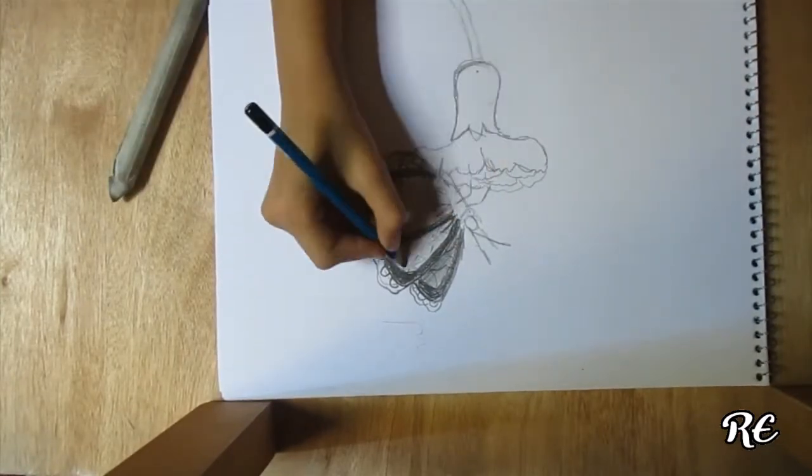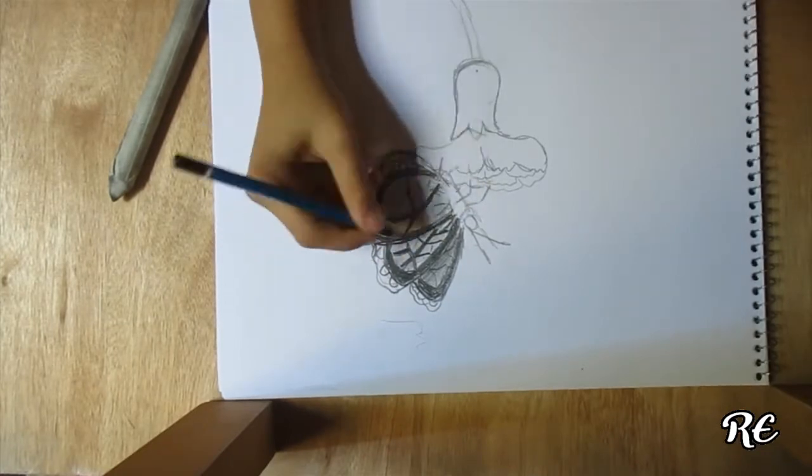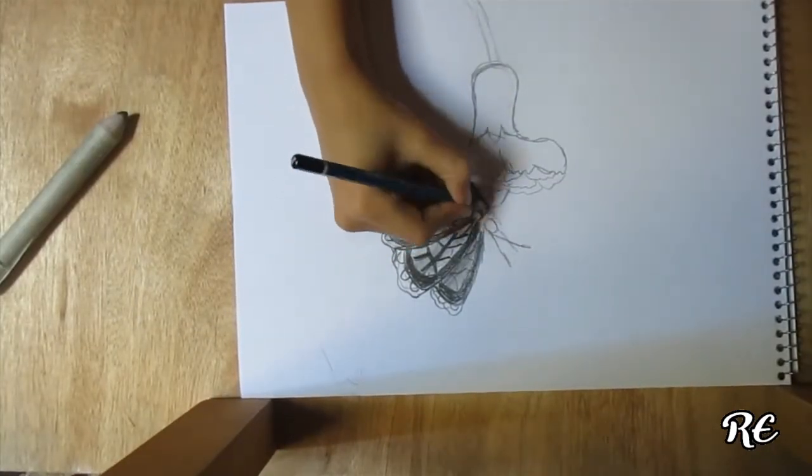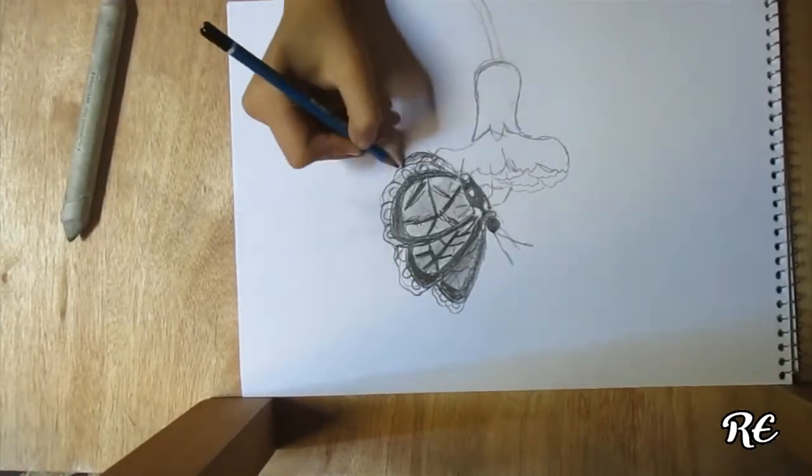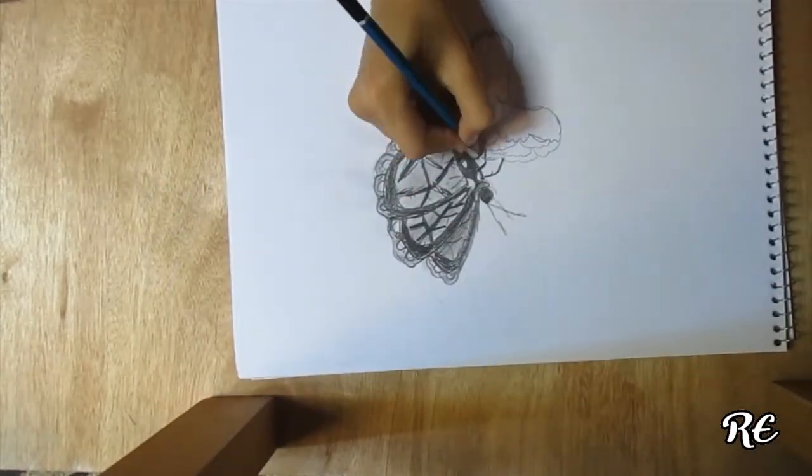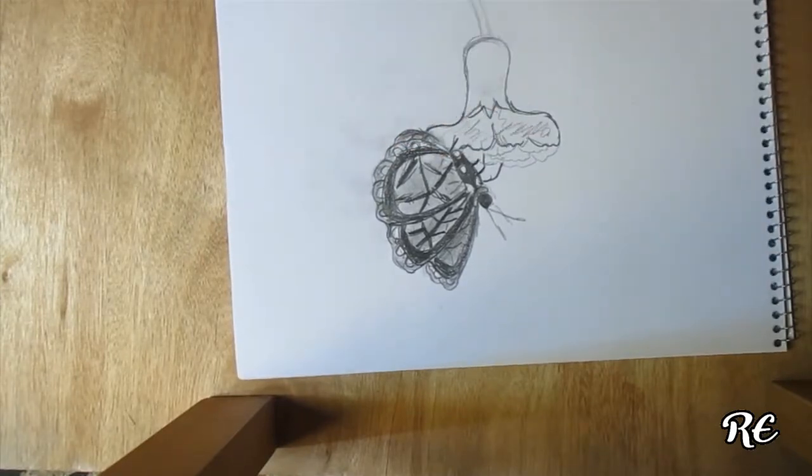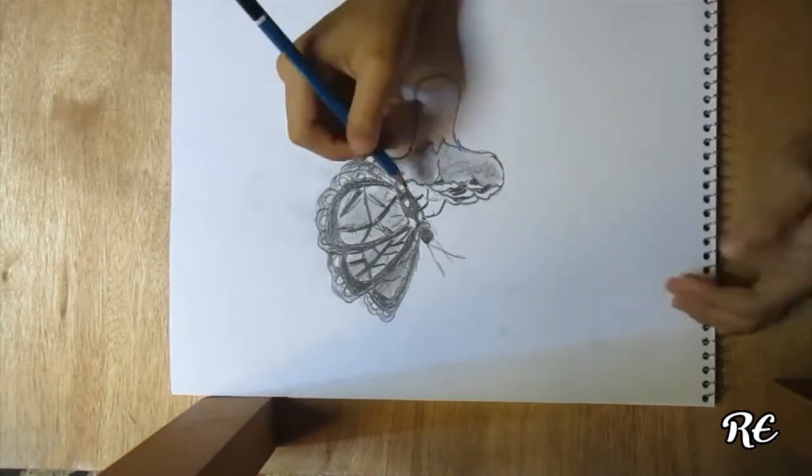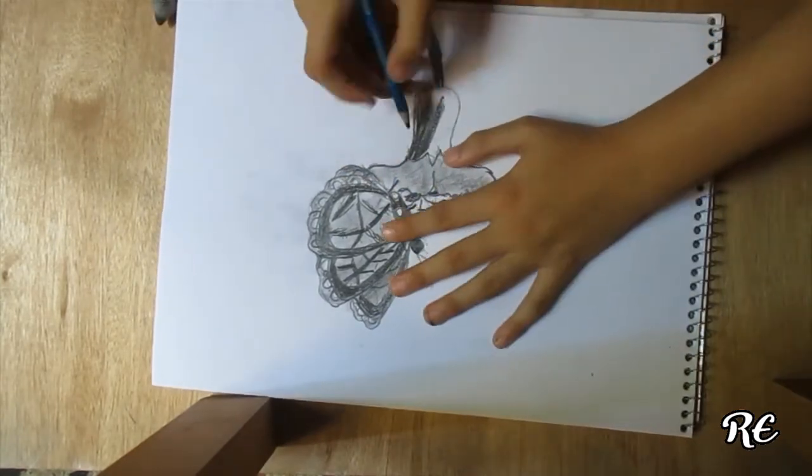then I started making the stripes. I was coloring the butterfly black and coloring some details. Then I started on the flower. I blended it and made it gray, and then